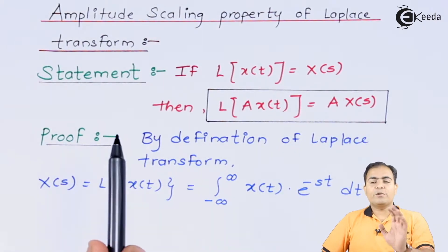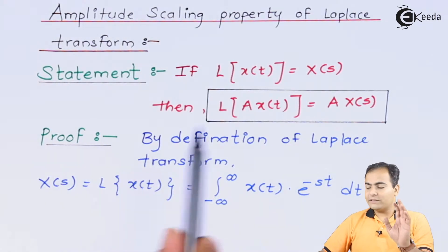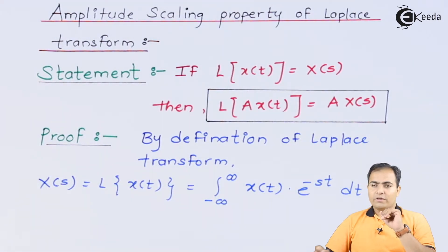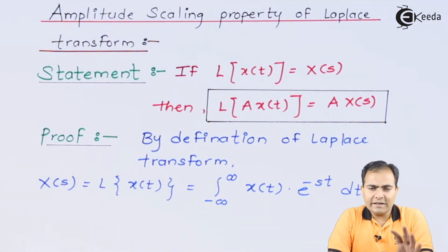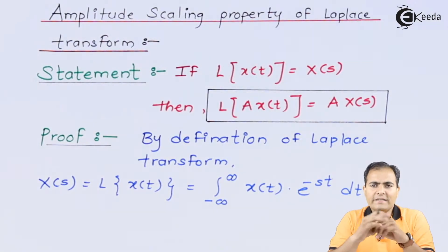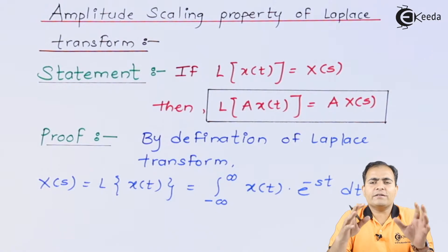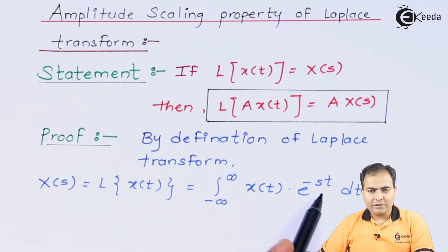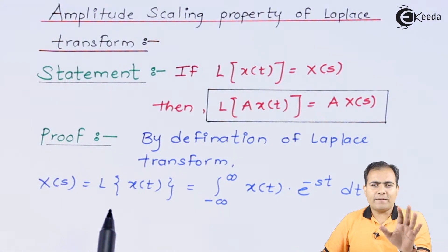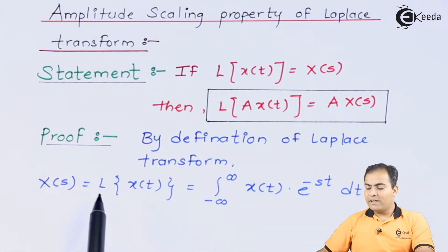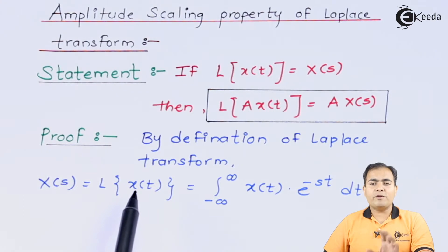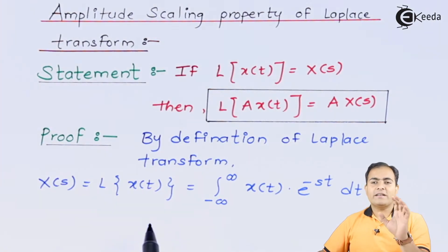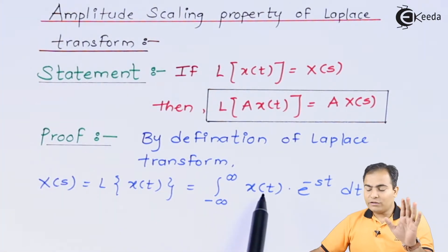Now we'll prove this. How are you going to achieve A x of s? Now we have studied the definition of Laplace transform. What is it? X of s, that is the Laplace transform of any continuous time signal, we can integrate using this definition. According to or by using the Laplace transform definition, the x of s is represented by Laplace transform of time domain x of t, which is nothing but the integration of x of t into exponential function having order minus st dt over the integration limit from minus infinity to infinity.